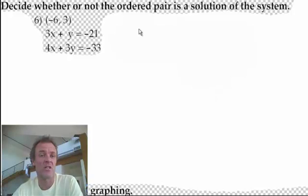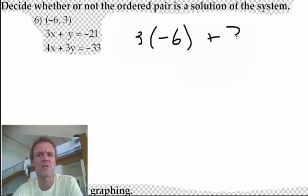Let's look at the first one. So x is negative 6 and y is 3. So 3 times negative 6, that's 3x plus y, y is 3.